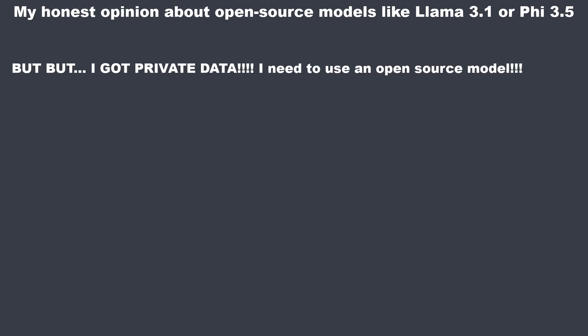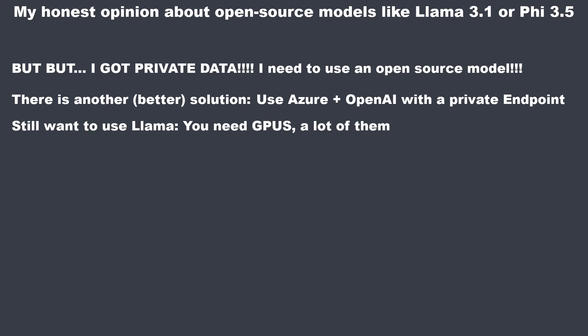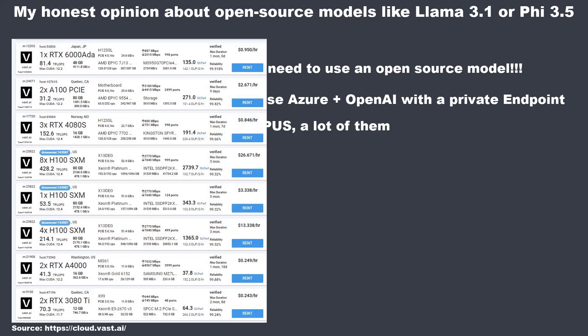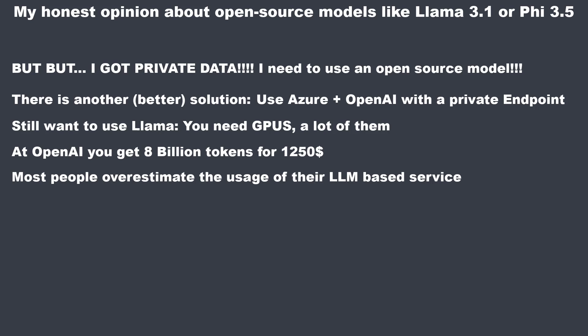I know you may have private customer data you don't want to send to OpenAI — totally understandable. I work in one of the highest regulated spaces in the world, the finance space in Germany, and we solved that by using Microsoft Azure with a private endpoint, so data transfer is safe and not accessible from the outside internet. But even if you still want to use LLAMA, you are responsible for hosting it somewhere, and that's not free. GPUs are very expensive — renting a server capable of running LLAMA 3.1 with 405 billion parameters may cost around $1,250 per month, which is equivalent to 8 billion tokens with GPT-4O mini. Eight billion tokens is a lot.